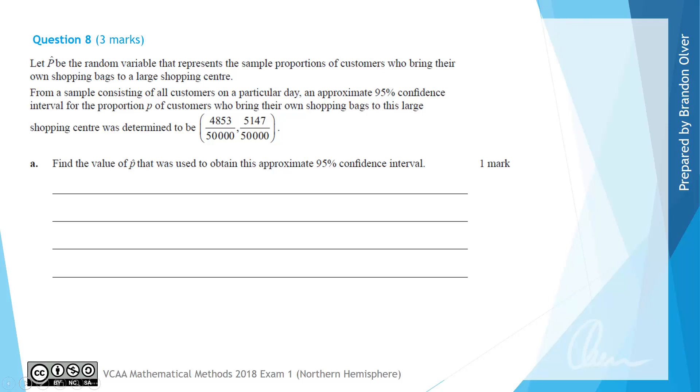We can acknowledge that if we have a confidence interval with L as the lower bound and U as the upper bound, then P hat is centered in the middle of those two values. We can find it by calculating (L + U) divided by 2.